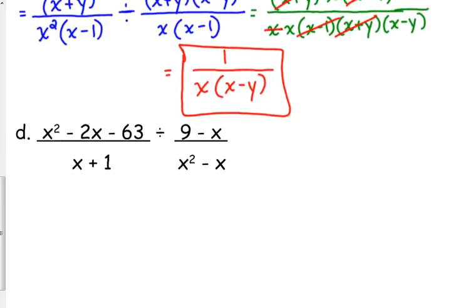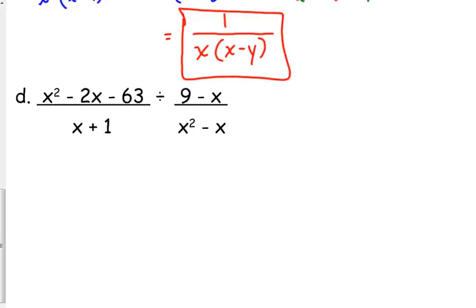Alright, one more. x squared minus 2x minus 63 over x plus 1 divided by 9 minus x over x squared minus x. Alright, so, I'm going to factor and flip in the same step. x minus 9 times x plus 7.